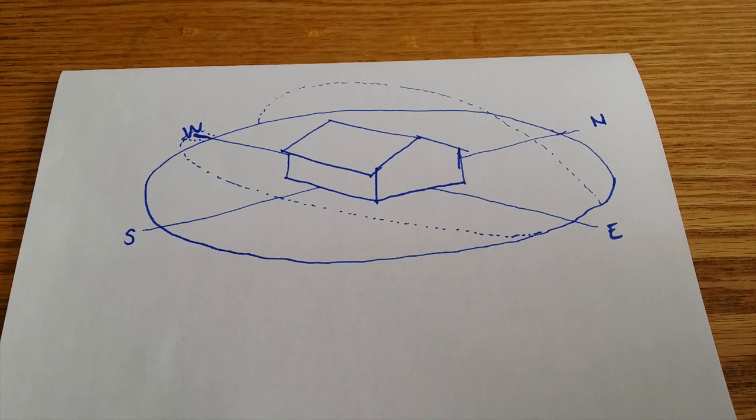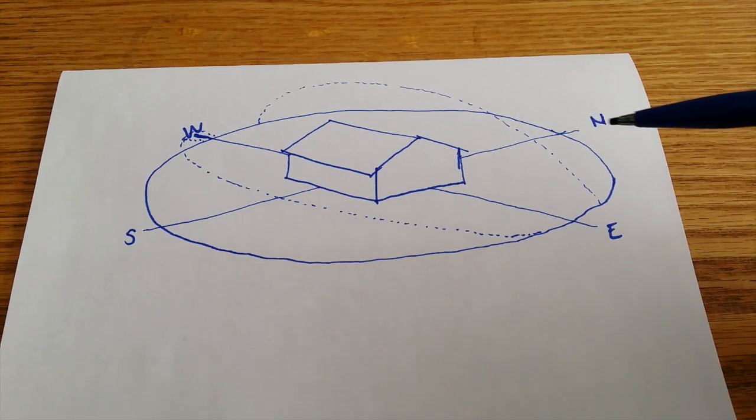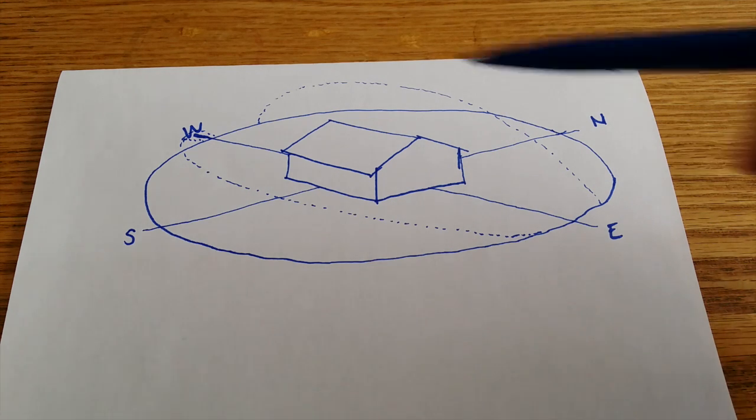Here we have drawn a small house in the optimal orientation. The longer facade facing north-south and the shorter facades facing east and west.